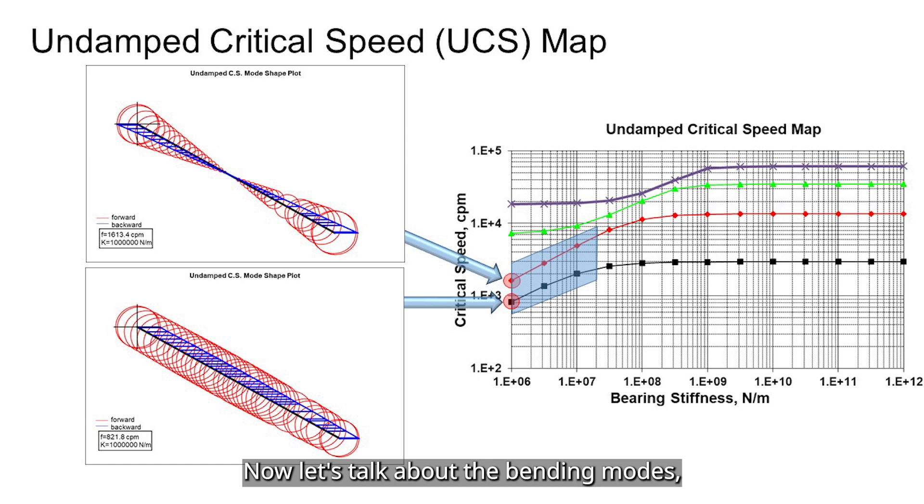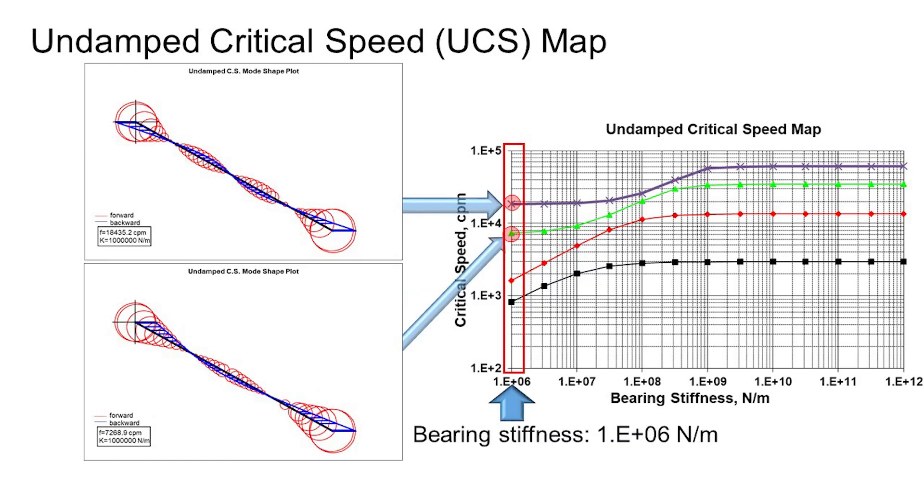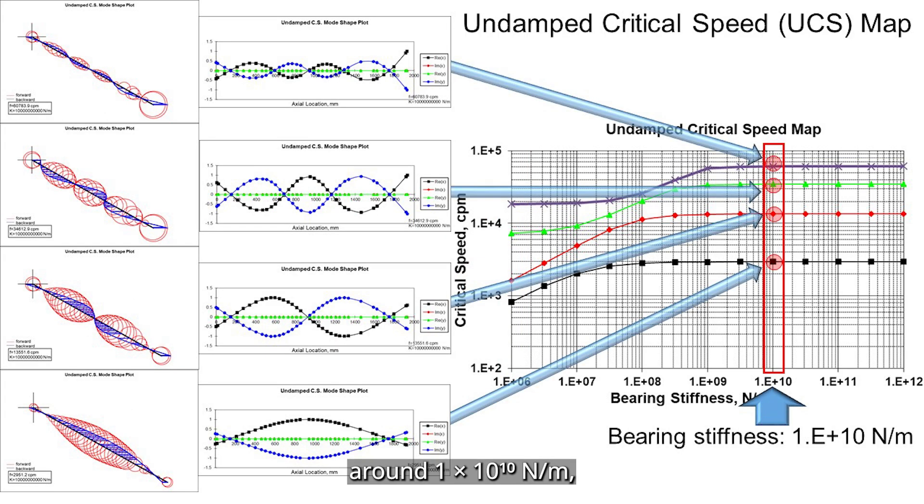Now let's talk about the bending modes, the third and the fourth critical speeds. For this example shown here, if you crank up the stiffness to around 10 to the 10th newton per meter, even the first critical speed starts to look like a bending mode. Let's put this into context with a real example.